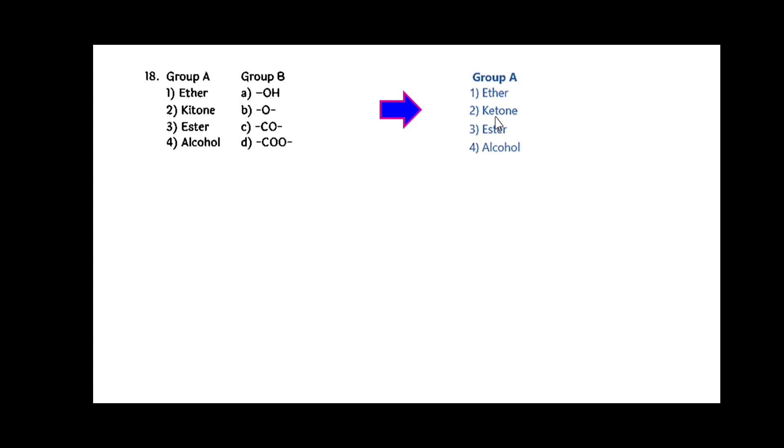Last pair: in group A ether, ketone, ester, and alcohol are given. The functional groups given are -O-, -CO-, -COO-, and -OH. The match is: ether — O; ketone — CO; ester — COO; and alcohol — OH.